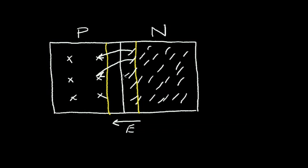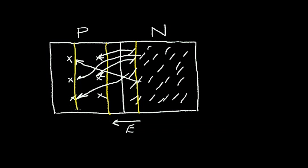So, these electrons will maybe have to wander way over here to recombine. Because this P region is lightly doped, the depletion region extends further into the region that is lightly doped, where the concentration is smaller. And at the junction, the depletion region is smaller into the N region, where the concentration of carriers is higher.